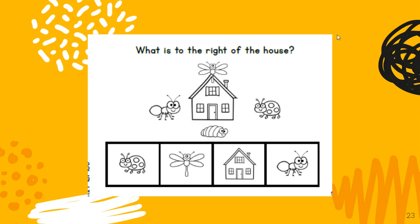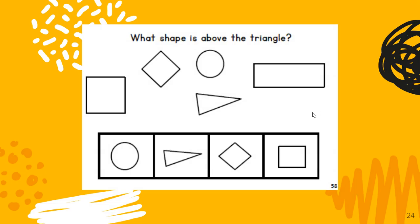What is to the right of the house? Remember, right is the opposite of left. So which one is to the right of the house? That is the little ladybug — he is to the right of the house. What shape is above the triangle? Which shape is above the triangle? The circle is above the triangle. Now I want you to practice some positional words — maybe move some things around in your house and then tell someone where they are.